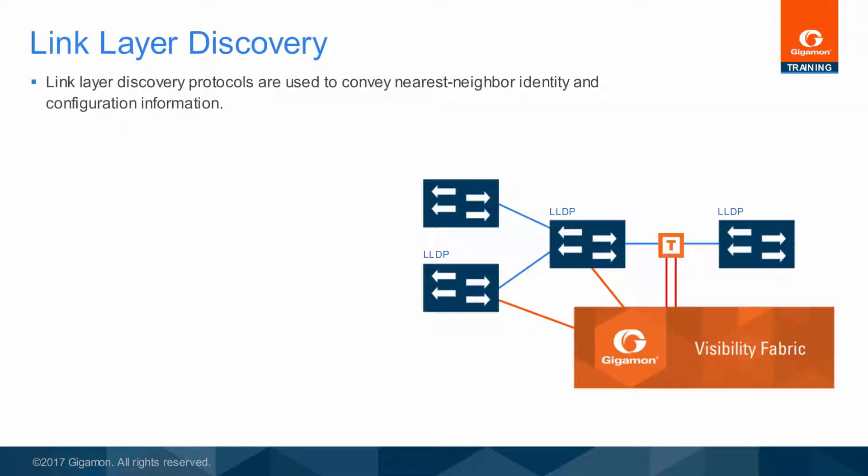A number of link layer discovery protocols are in use, but the most common are LLDP, defined by IEEE 802.1, and CDP, which is a Cisco protocol. These protocols are used to share information between directly attached neighbor switches.